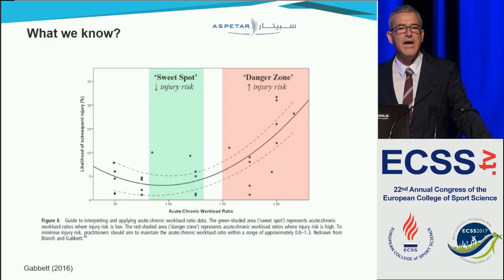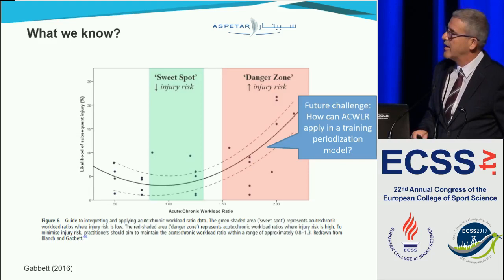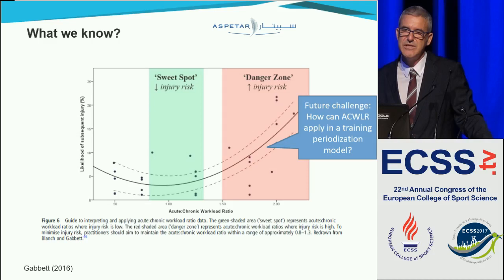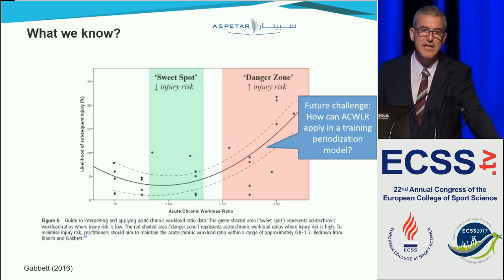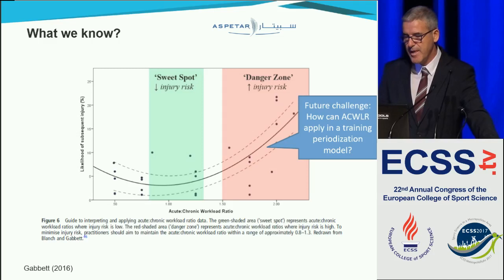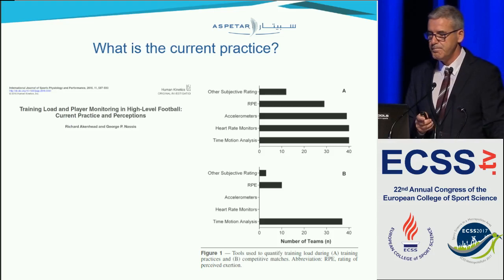However, there are few studies in football on this topic. More are published every few months, and the vast majority are in youth players. So we don't really know what this relationship looks like in senior teams. We also don't know how this relationship fits into training periodization models. Teams — even at high level — follow different periodization models, such as tactical periodization, popular in some countries, or modified block periodization approaches. I'm wondering if this acute-to-chronic relationship holds true for professional high-level players — this is still to be answered.